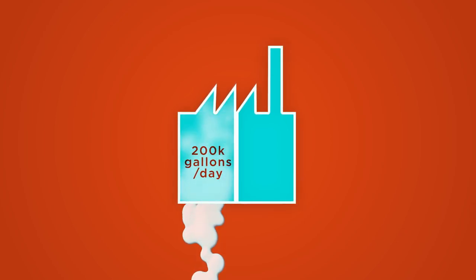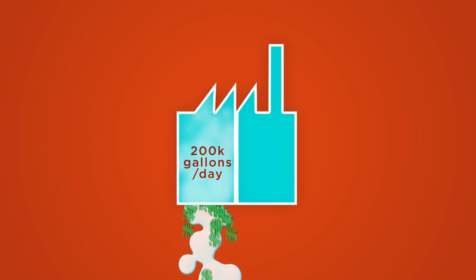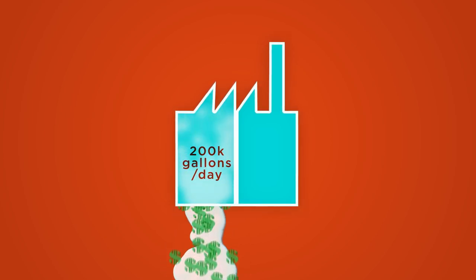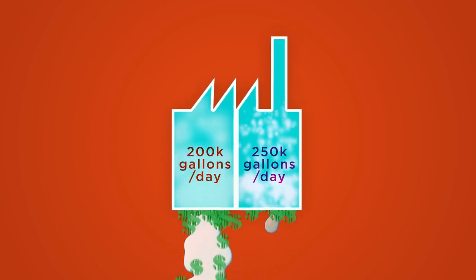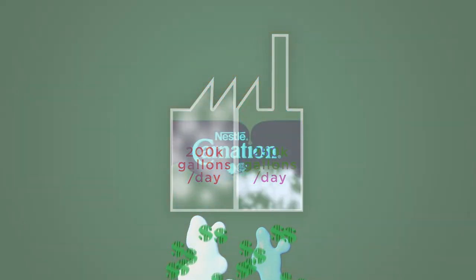and throwing it in the sewer and paying, of course, to throw it in the sewer. At another part of the factory, they're paying to buy 250,000 gallons of water a day to run the factory. They're also paying to throw that away. In the middle of the drought,